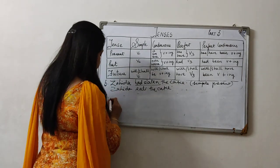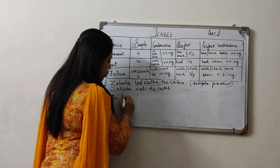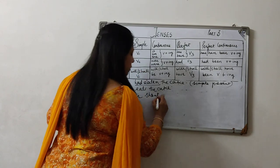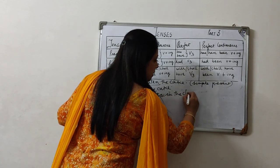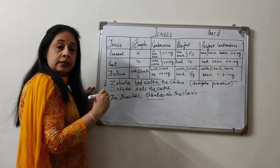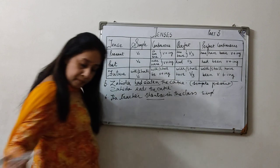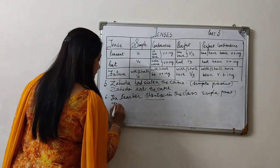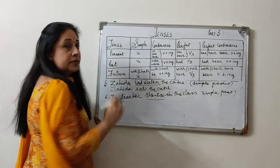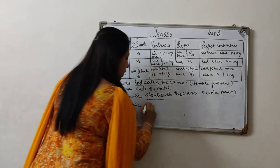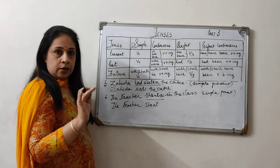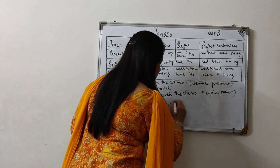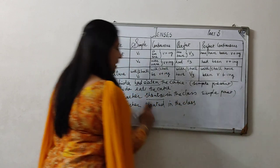Request everybody to keep giving yourself different types of sentences and keep changing into different tenses — do the conversions, you will never go wrong, and you will also get thorough with the three forms of verbs. Suppose the next sentence is: 'The teacher shouts in the class.' Shouts is simple present. Suppose we have to change it into simple past — we have to write the verb second form. 'Shout' is a weak verb, so the past tense and past participle remain the same. 'The teacher shouted in the class.'